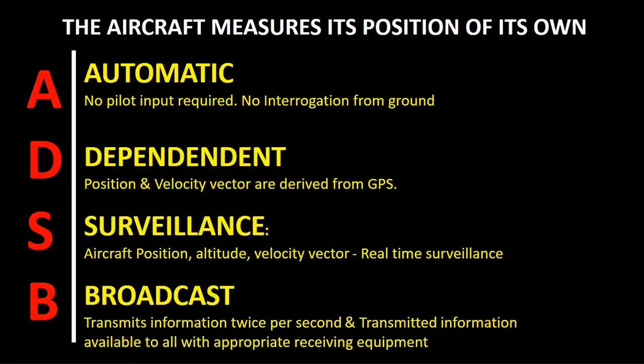Originally known as Future Air Navigation System, now matured into the system known as Automatic Dependent Surveillance. It is Automatic because it requires no pilot or controller input. Dependent because it requires operating airborne equipment like a transponder. Surveillance: the information received is used by air traffic controllers to provide surveillance services. Broadcast: in this system, the aircraft has a special transponder that broadcasts position, speed, altitude, and state vector at a much higher rate of twice per second.